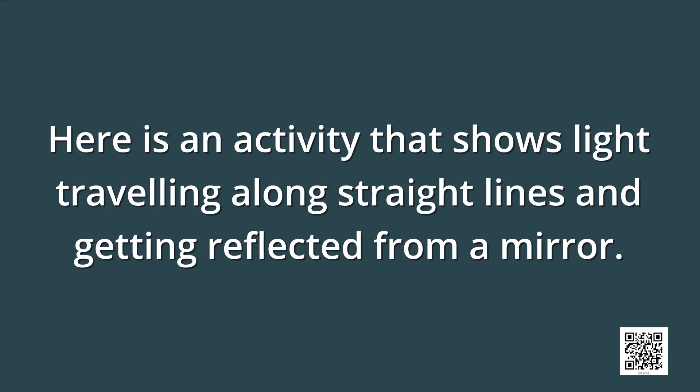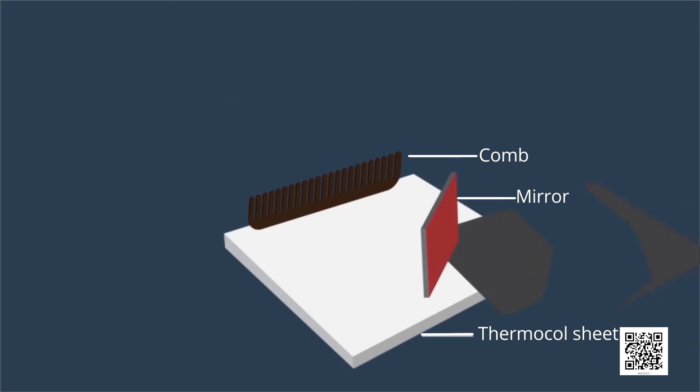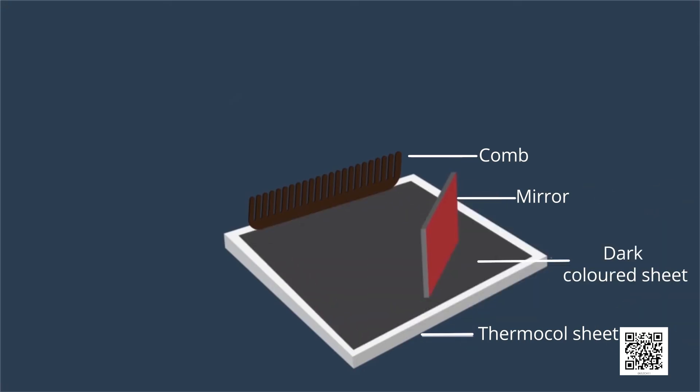Let us perform another activity. Fix a comb on one side of a large thermocol sheet and fix a mirror on the other side. Spread a dark coloured sheet of paper between the mirror and the comb. Keep this in sunlight and send a beam of light from a torch through the comb. What do you observe? Do you get comb-like pattern? This activity gives us an idea of the manner in which light travels and gets reflected from a mirror.